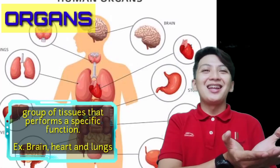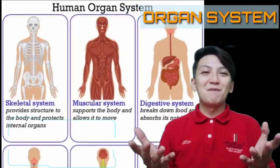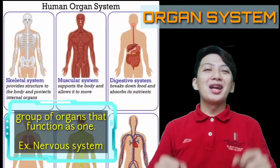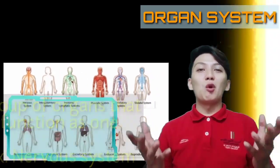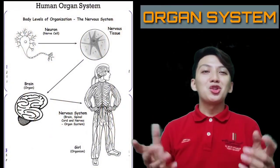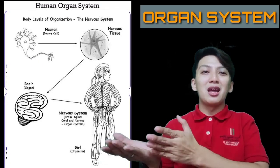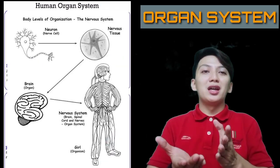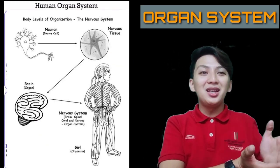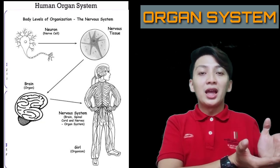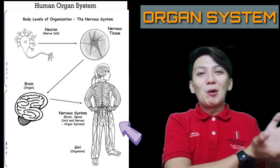A group of organs is what we call organ system — that's number six, organ system. We have 11 types of organ systems in our body. At the cellular level, we have nerve cells or neurons. At the tissue level, we have nervous tissue. And at the organ level, we have the brain and the spinal cord. The nervous system is the organ system.